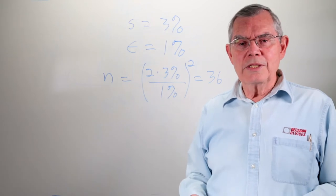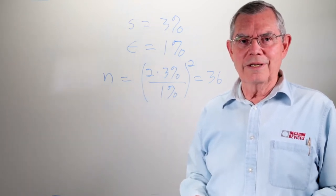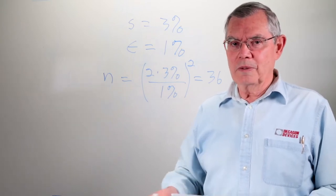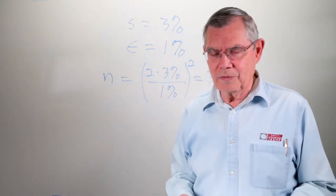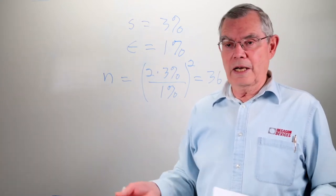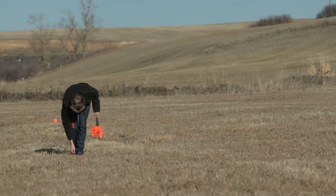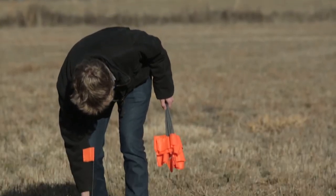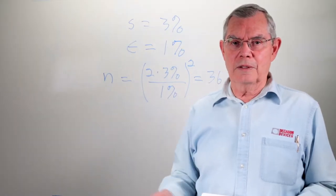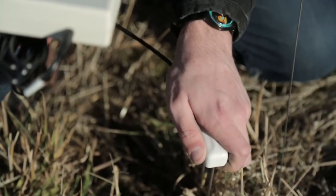When we see that number, typically we get pretty discouraged. That's more samples than we want to take — more samples probably than we can afford to take. To see how that relates to reality, we did a little experiment. We have a soccer field out behind the Decagon building, so we went out and took one of our sensors, the GS3, hooked it up to our handheld device, and set up three transects twenty meters long, parallel with each other and spaced a meter apart.